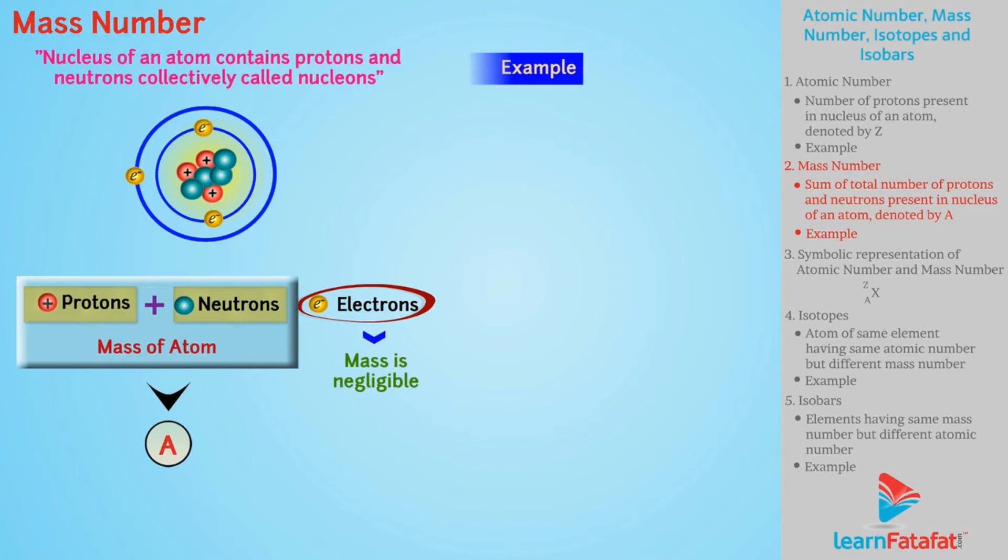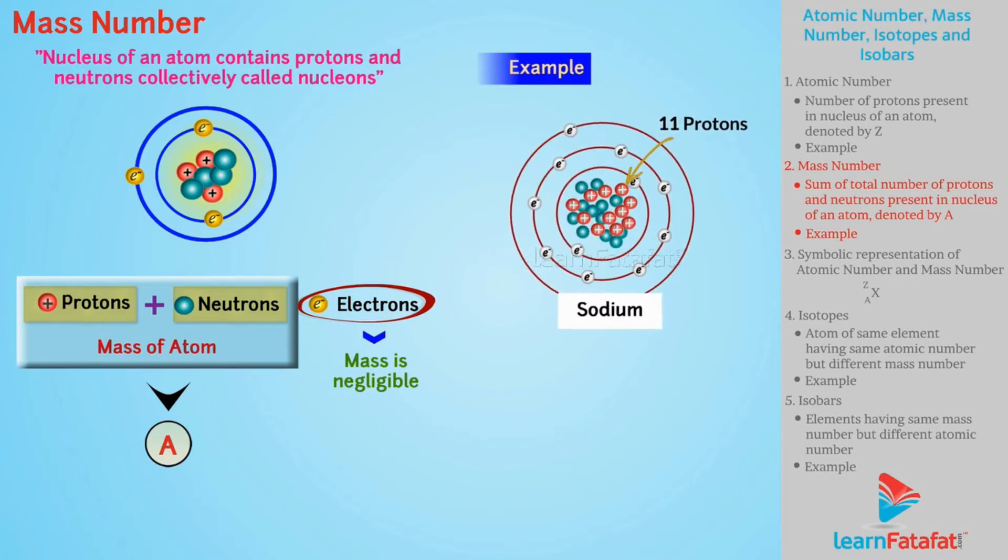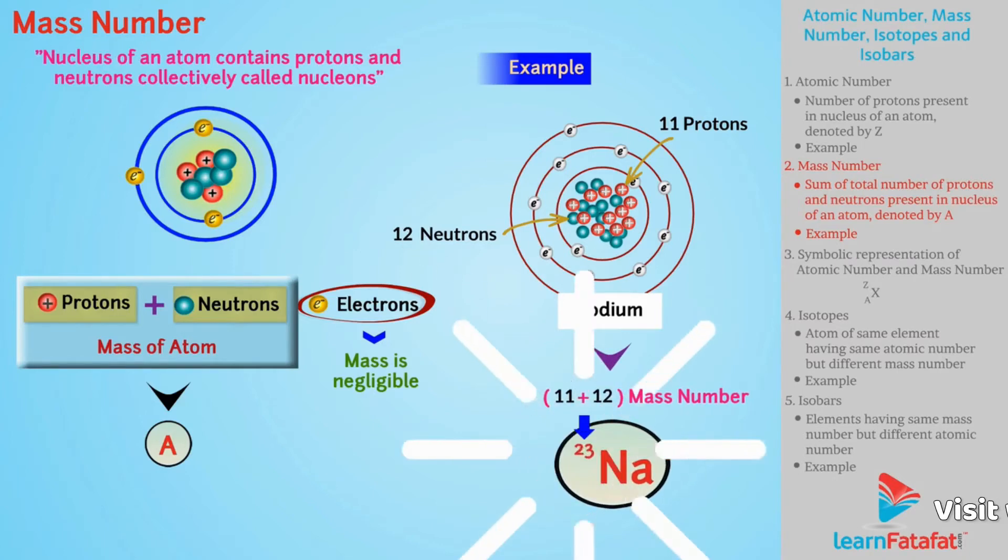For example, sodium has 11 protons and 12 neutrons. Hence, mass number of sodium is 23.